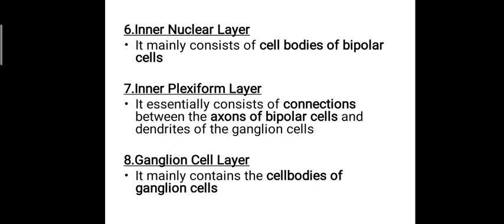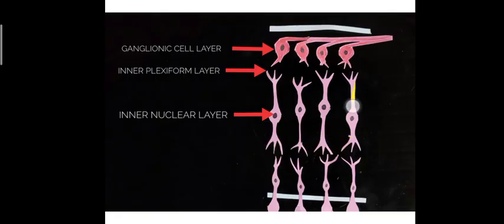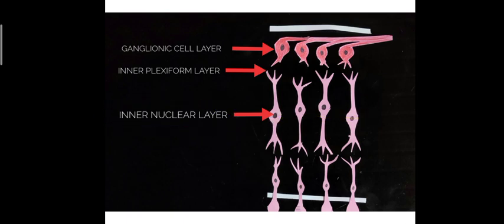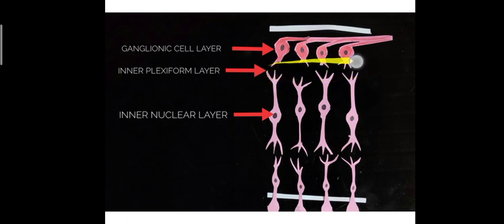The eighth layer is the ganglionic cell layer, containing the cell bodies of the ganglion cells. In the diagram, you can see the bipolar cells with their nuclei in the inner nuclear layer, then the inner plexiform layer where connections between ganglion cell dendrites and bipolar cell axons occur, followed by the ganglionic cell layer.